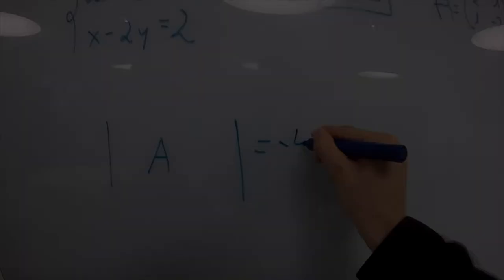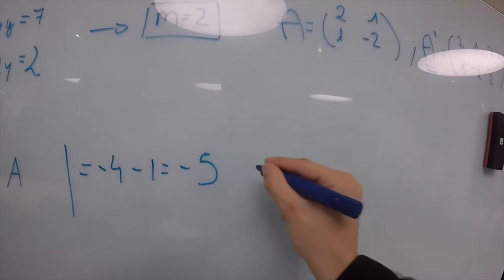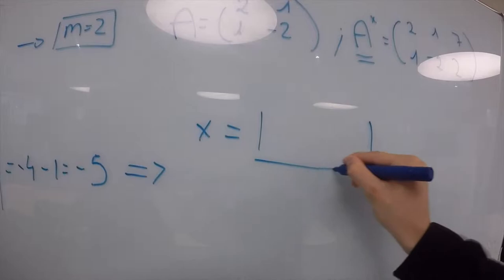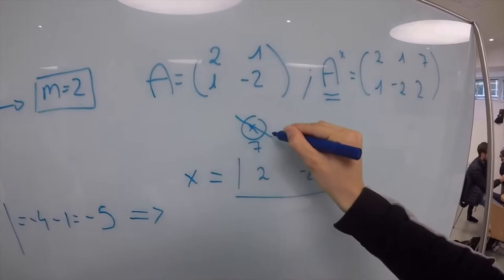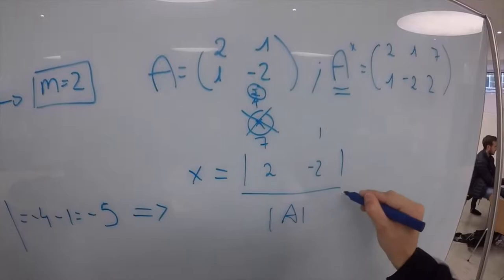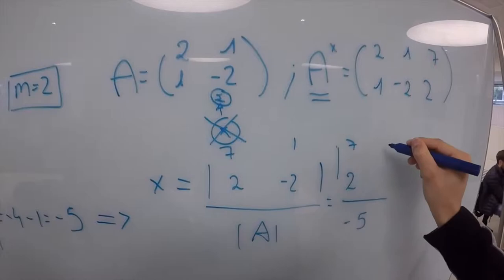In x, our numerator will be the matrix changing the first column for the amplified matrix, and our determinant will be the determinant of A. Here we get the solution by doing first the determinant of our matrix changing the inverse and we get minus 16 over minus 5, which is 16 over 5.